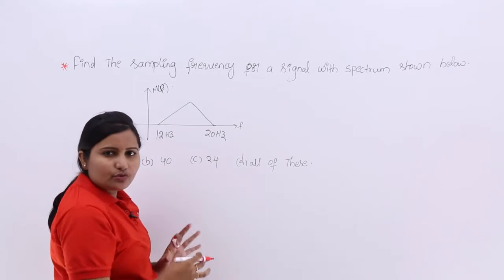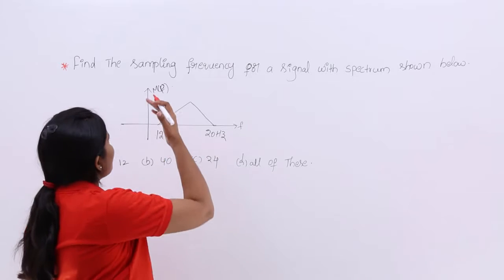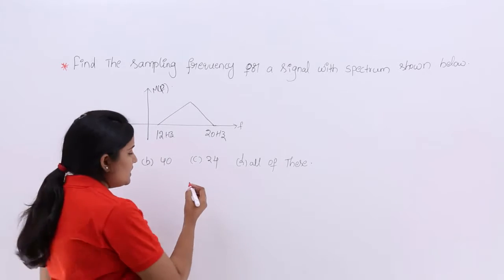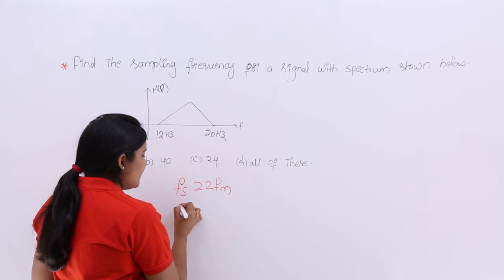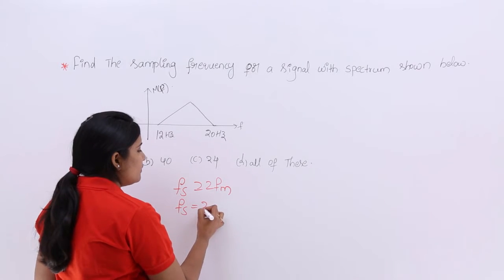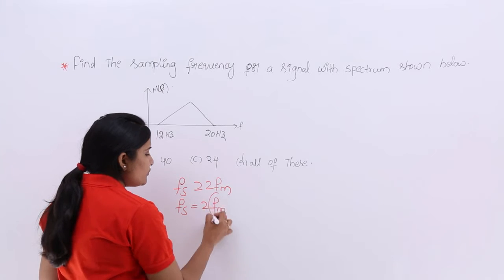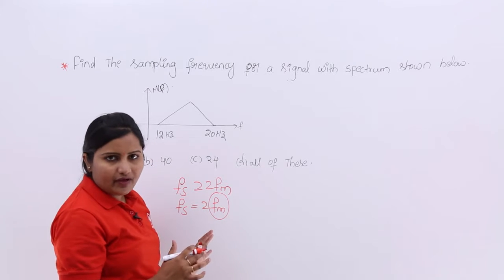Why are we going to message frequency components? They are asking sampling frequency. Sampling frequency must be greater than or equivalent to 2 fm. At least it must be a Nyquist rate, that means 2 fm. You need to find out the fm value.